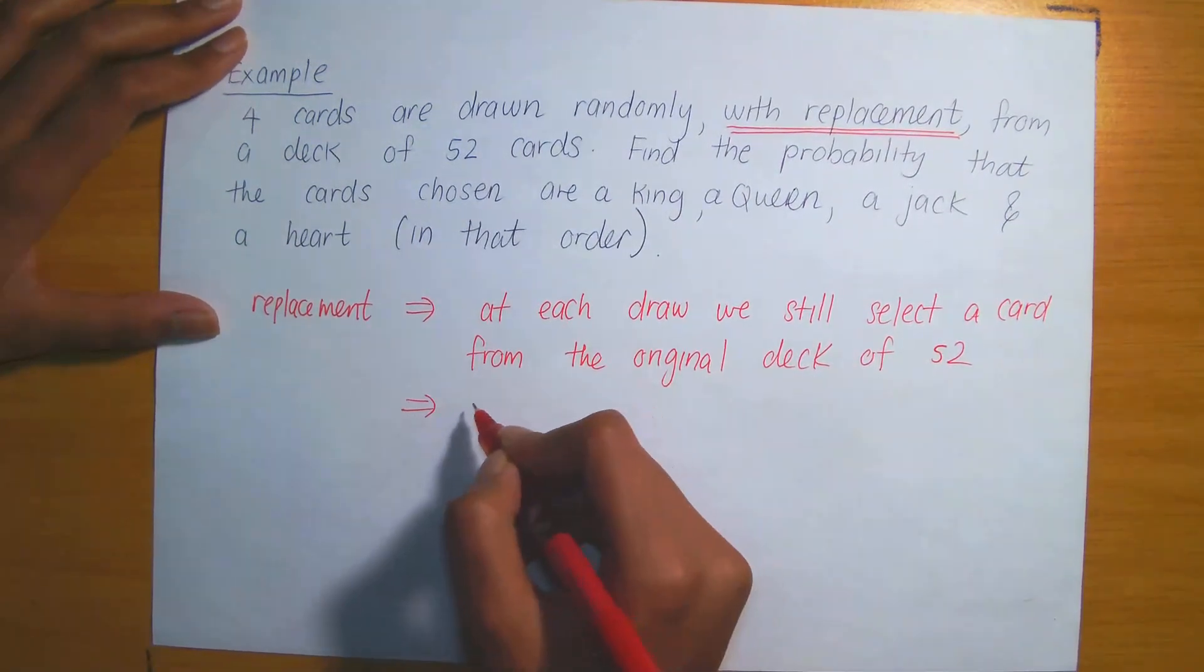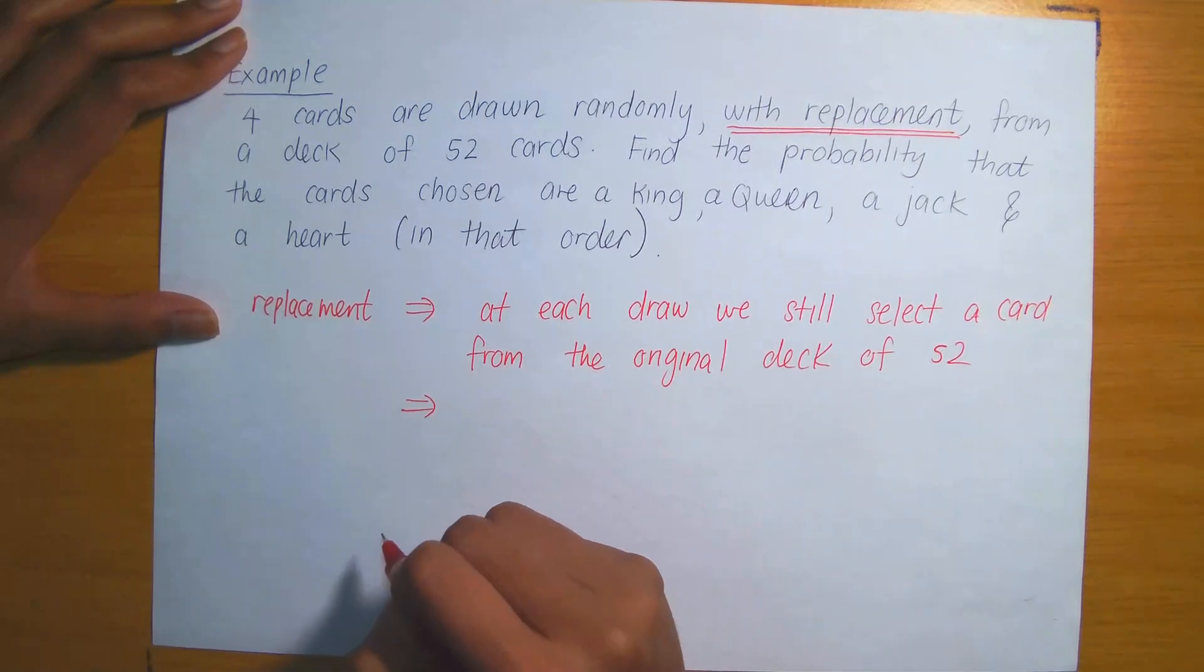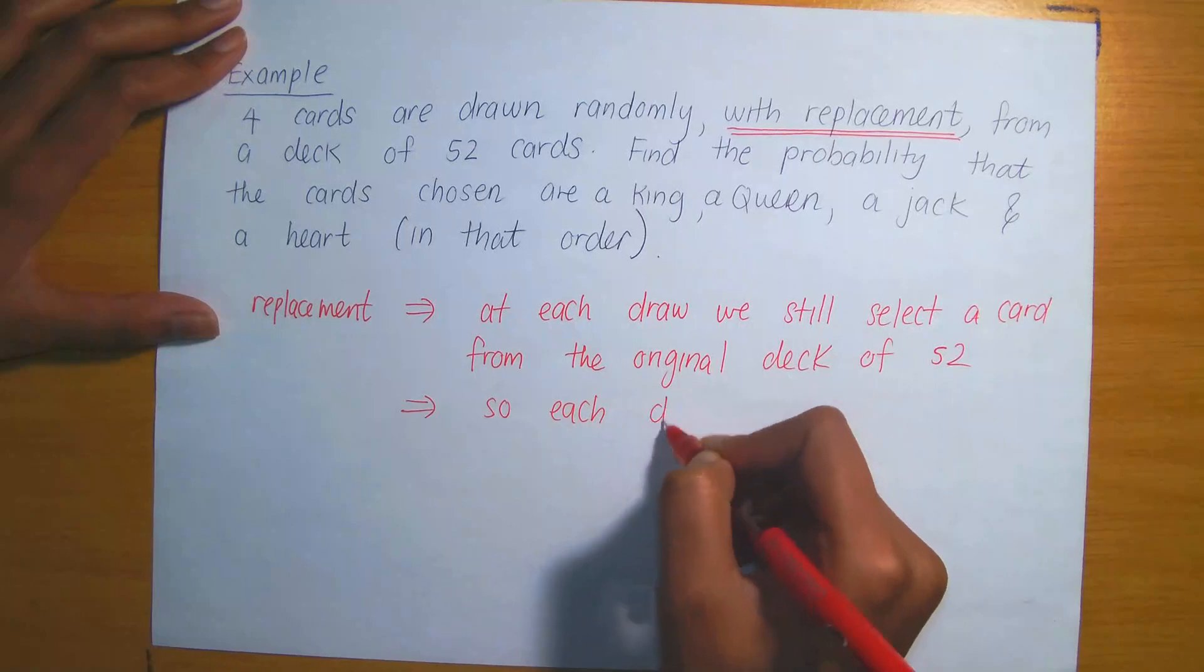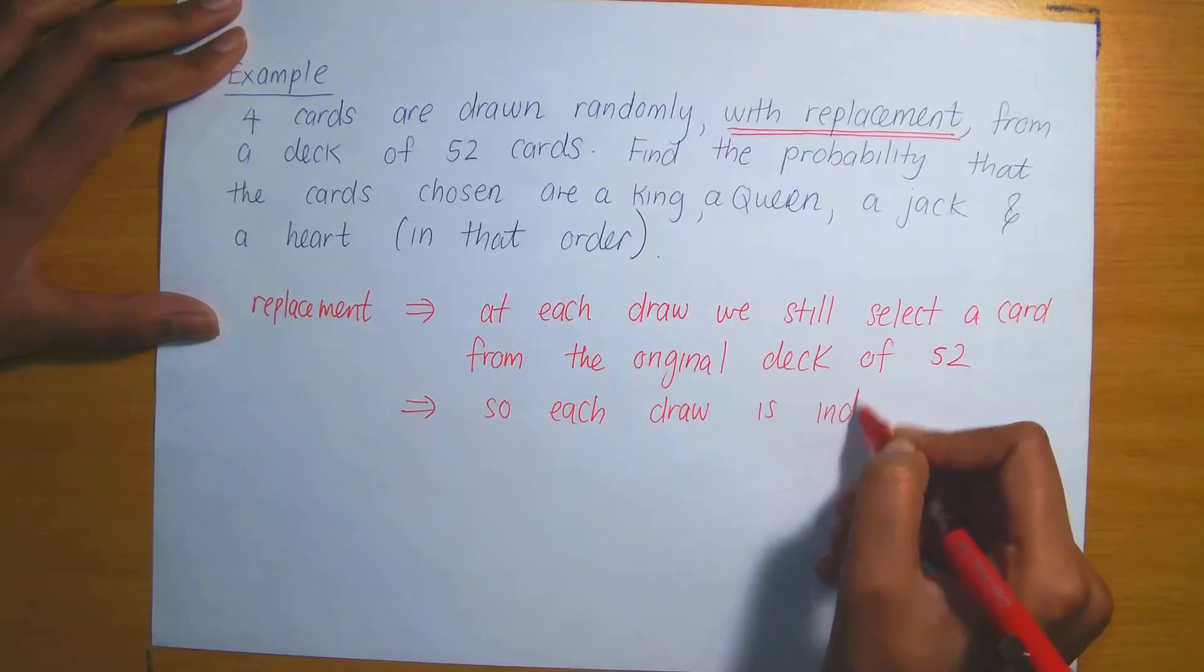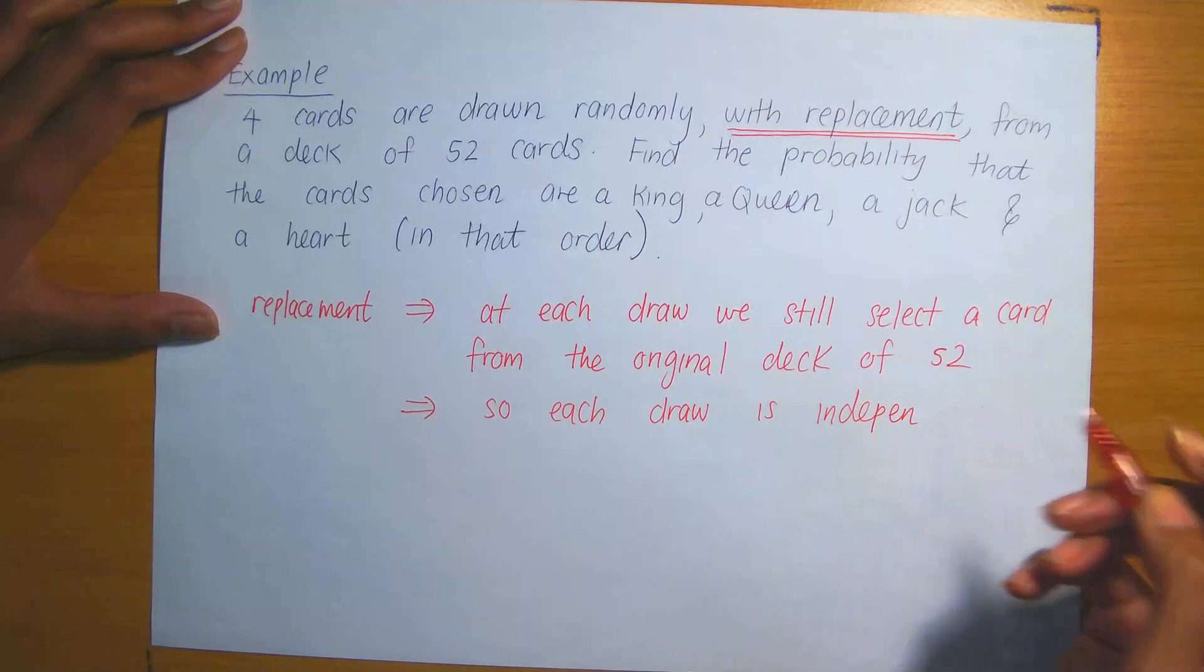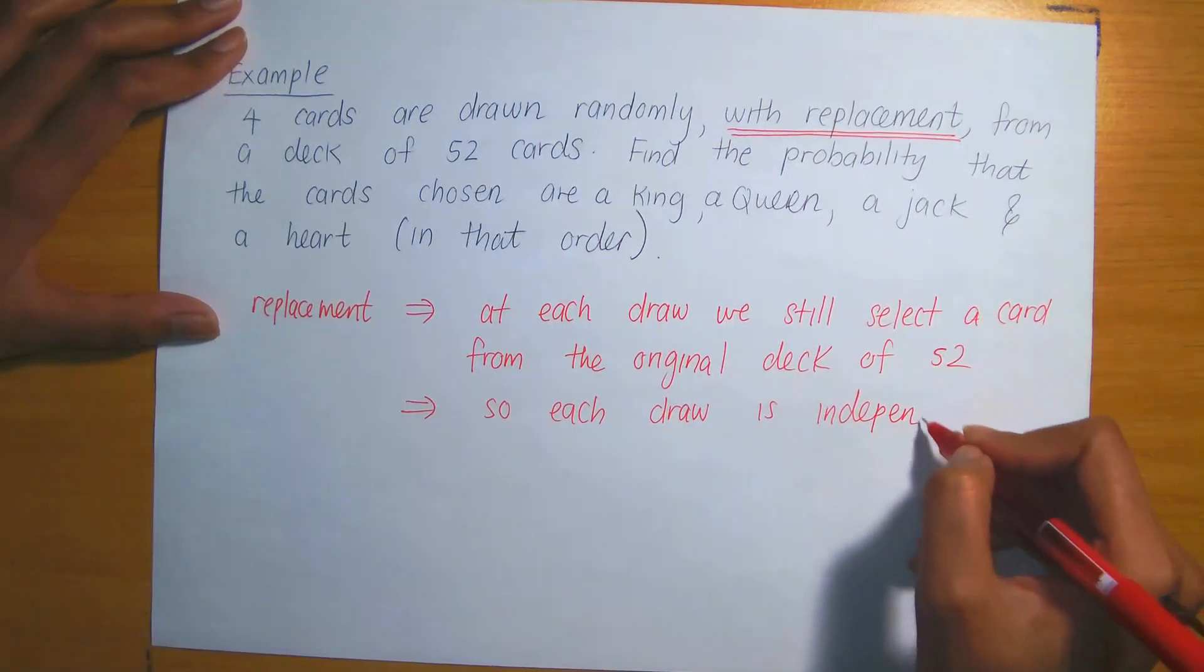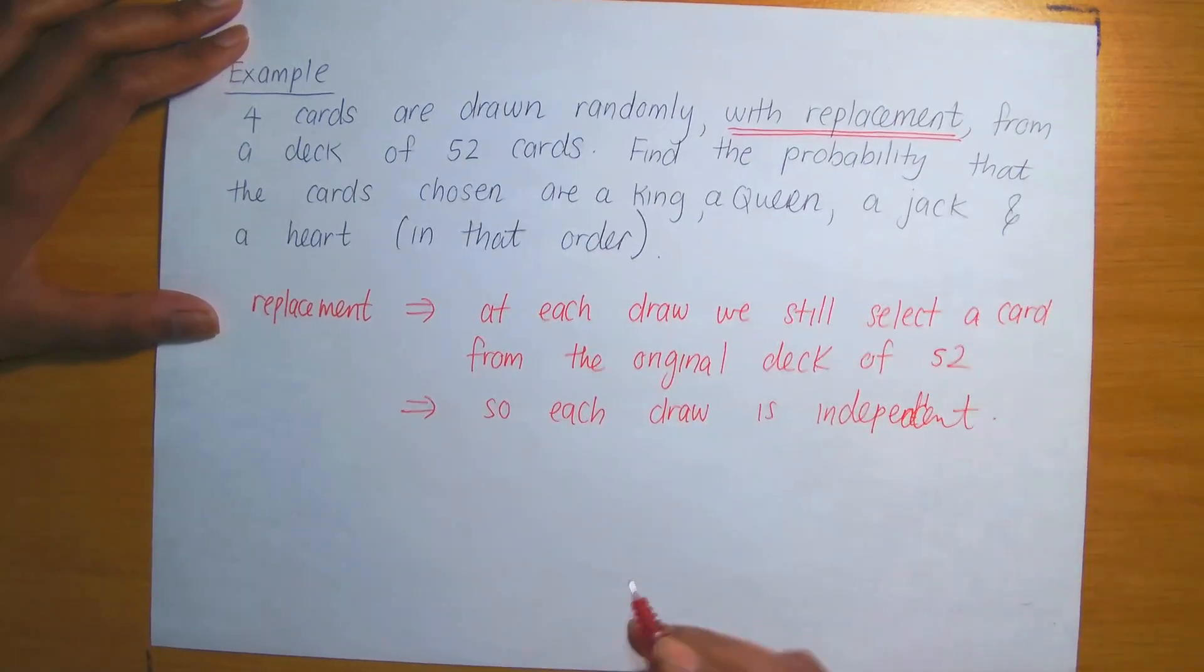As a result, this implies that these are independent events. Each draw is independent. And because we know that this is now independent, these are independent events that are occurring.